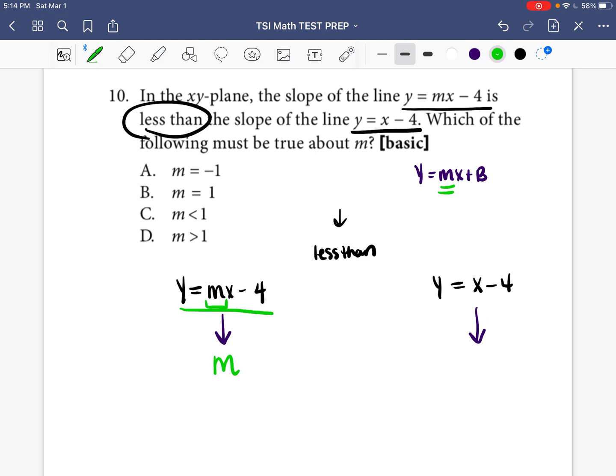Okay, then for this Y equals X minus 4, again, the slope for this one would be whatever number or letter is written before the X. In this case, there'd be an invisible 1 before the X. So the slope would be equal to 1.